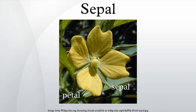The number of sepals in a flower is its merosity. Flower merosity is indicative of a plant's classification. The merosity of a eudicot flower is typically four or five. The merosity of a monocot or paleodicot flower is three, or a multiple of three.